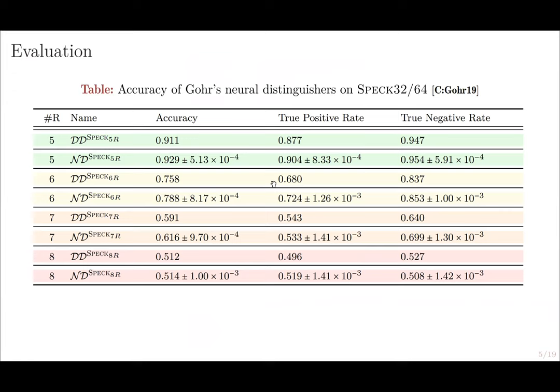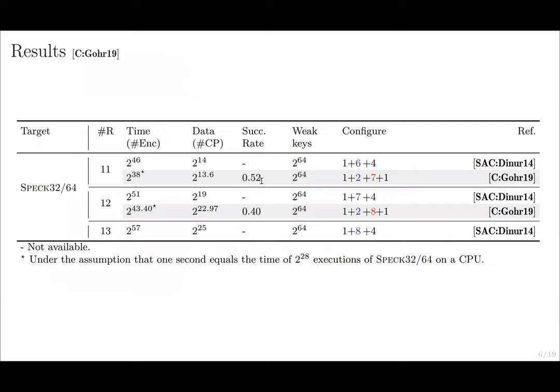Using these neural distinguishers in the improved key recovery framework, with comparable data complexity, the time complexity of the attack on 11 rounds was reduced significantly.